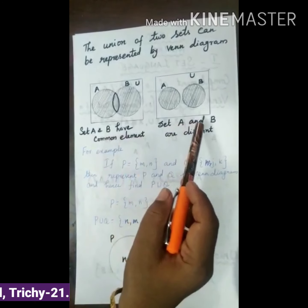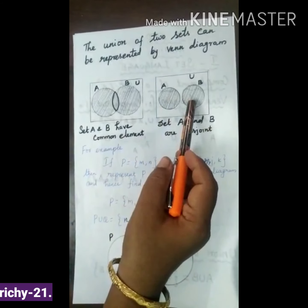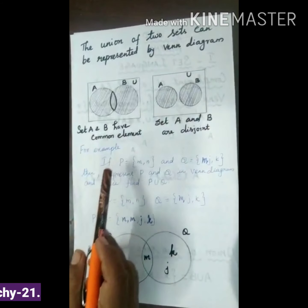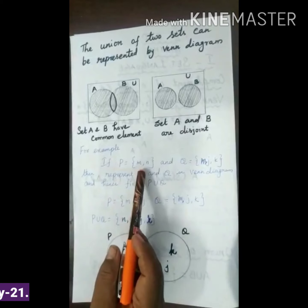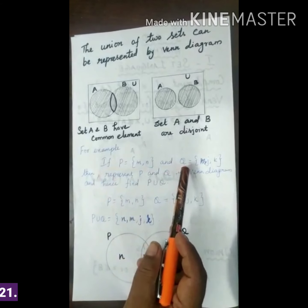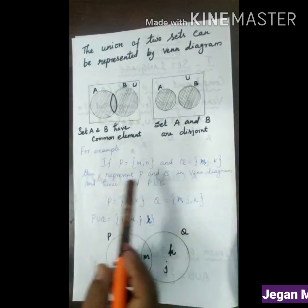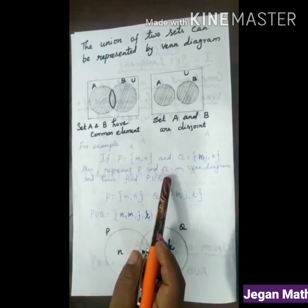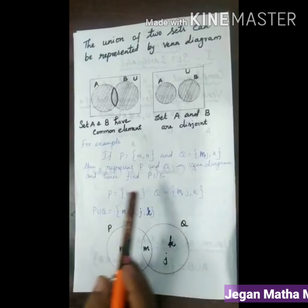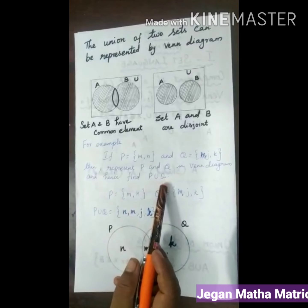Set A and B are also shown as a disjoint set. For example, if P is equal to {M, N} and Q is equal to {M, J, K}, then represent P and Q in a Venn Diagram and hence find P union Q.